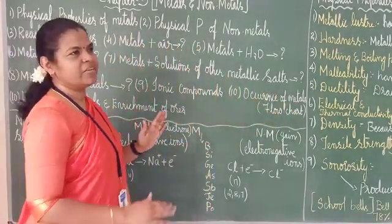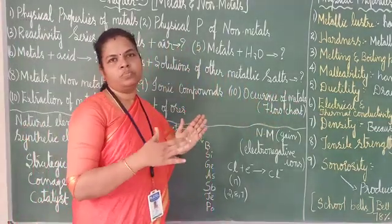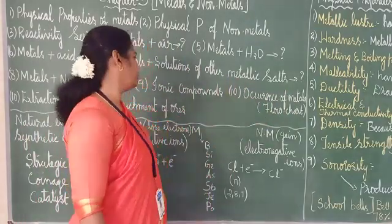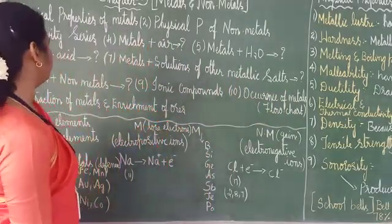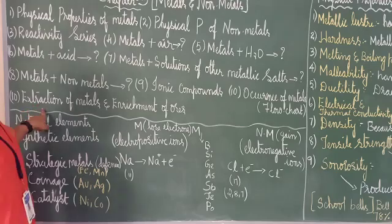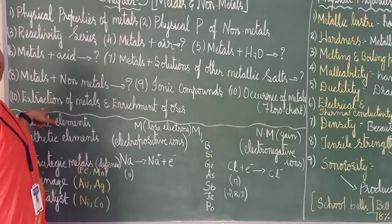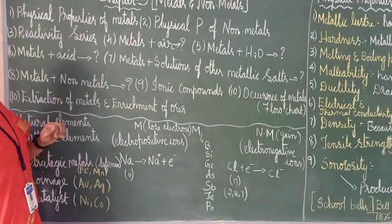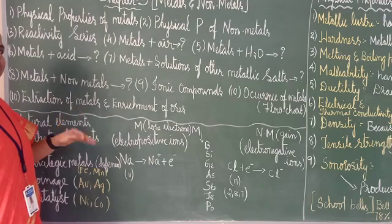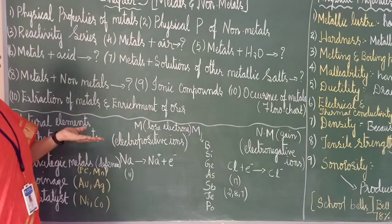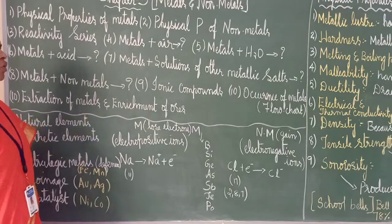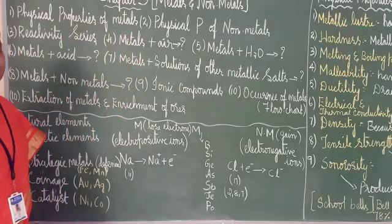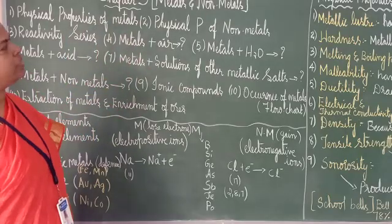There are three reactivity levels: highly reactive, medium reactive, and low reactive. We are going to study about that. We will also study about extraction of metals — how metals can be extracted and how they are enriched. That is what we are going to study in this chapter.